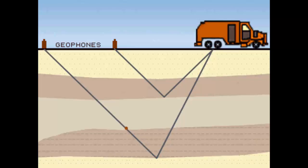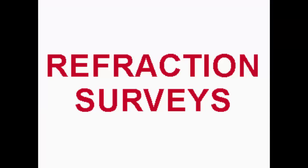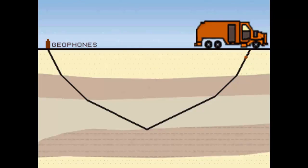Wherever the energy encounters a change in density of rock, it gets reflected upward and gets recorded on the geophones. This process is repeated across a series of stations along a survey line. In a refraction survey, a similar technique is used, except that the distance between the shot hole and geophone is very large and the travel time of the refracted waves is recorded. Refraction surveys give a large-scale picture of the area compared to reflection surveys.